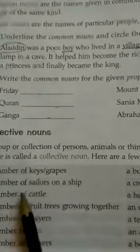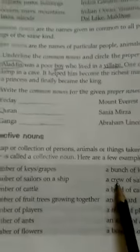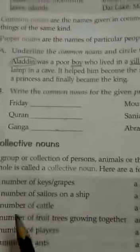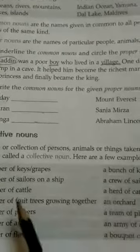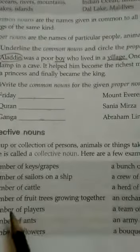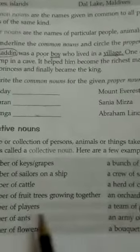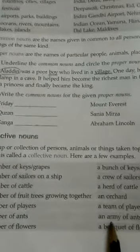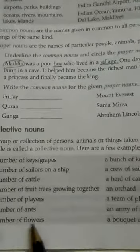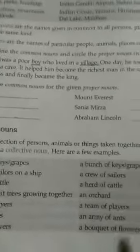A group of cattle is known as a 'herd.' A number of fruit trees growing together is called an 'orchard.' A number of players is a 'team.' A number of ants, and also a number of soldiers, is called an 'army.' When we have many flowers, we call them a 'bouquet' of flowers.